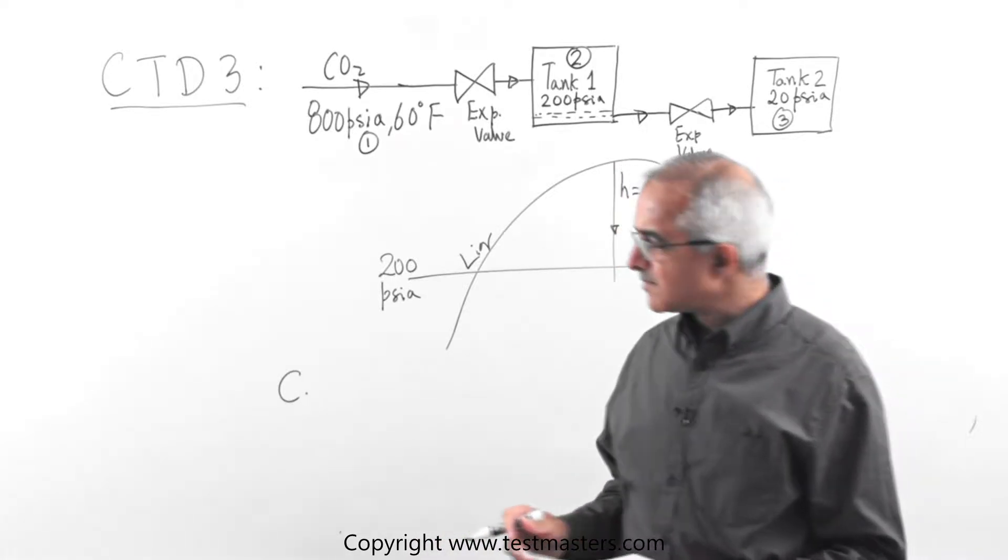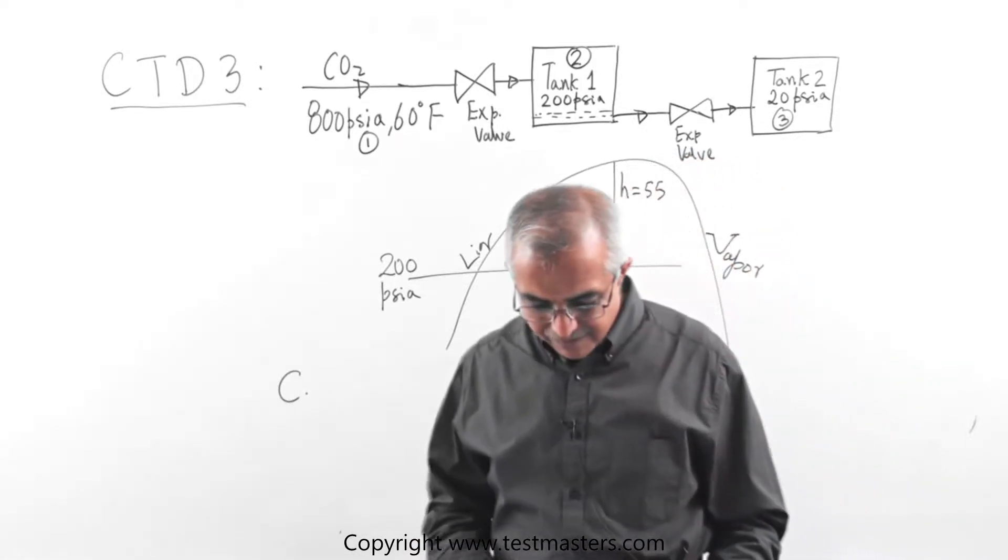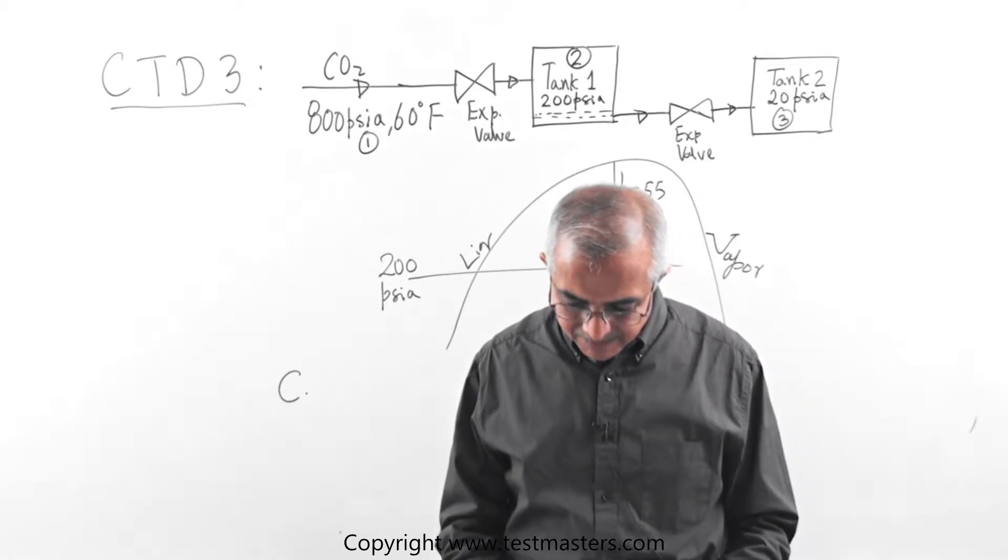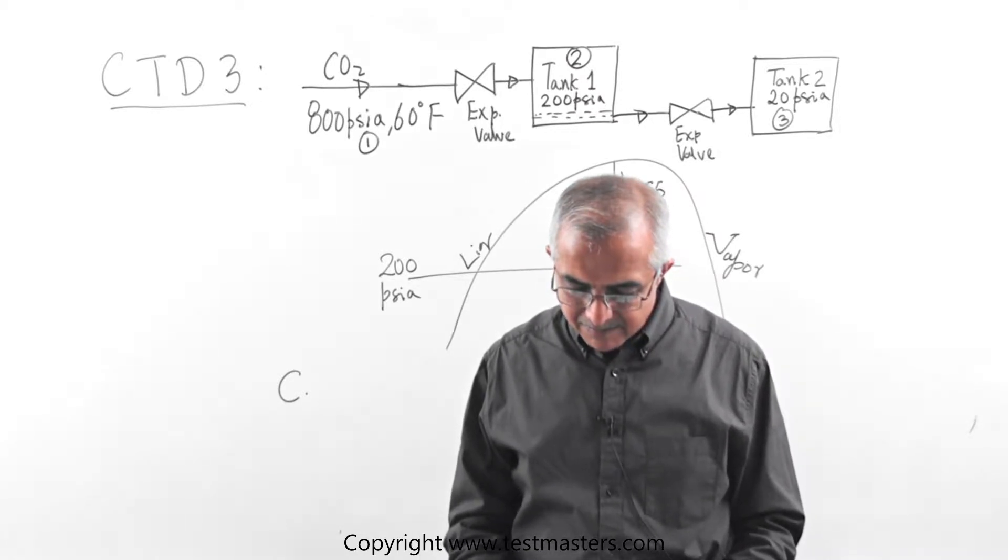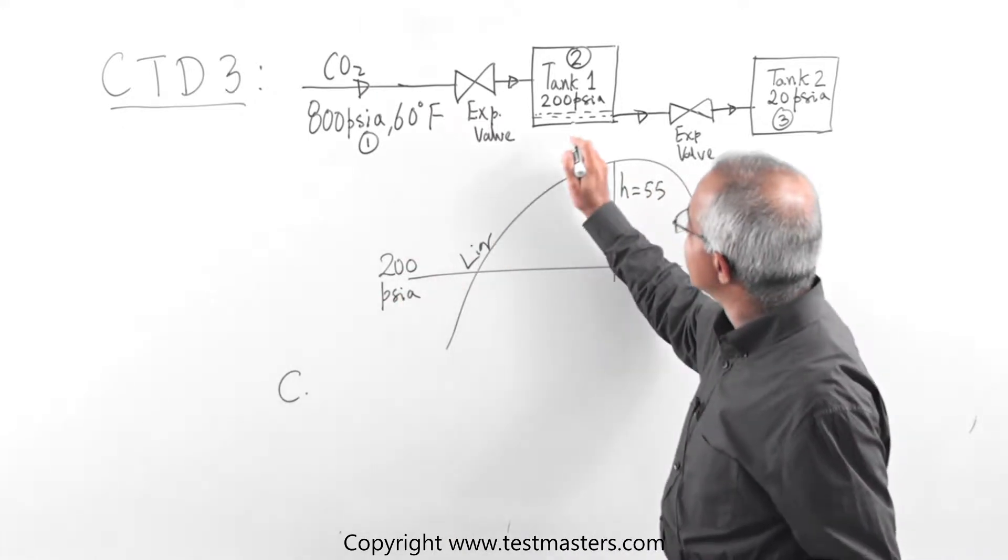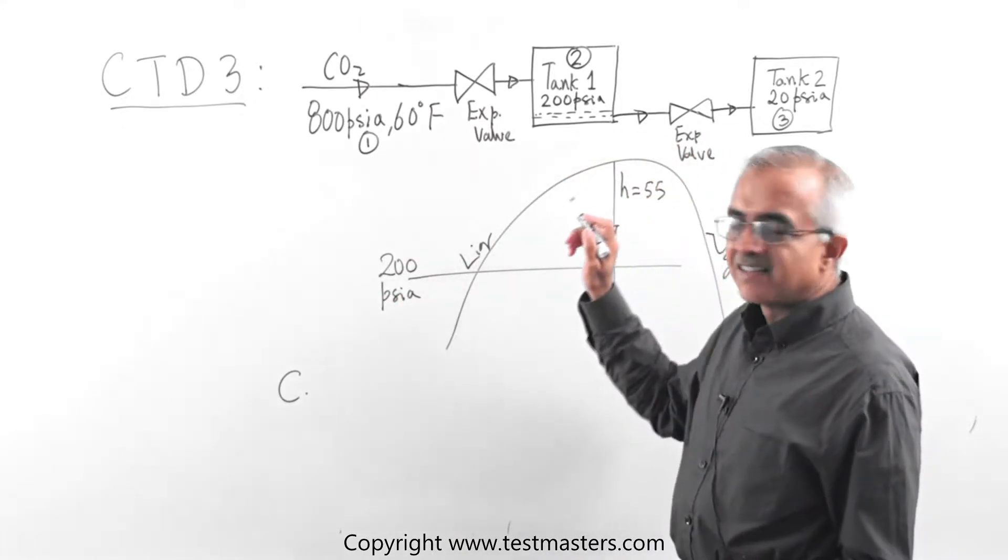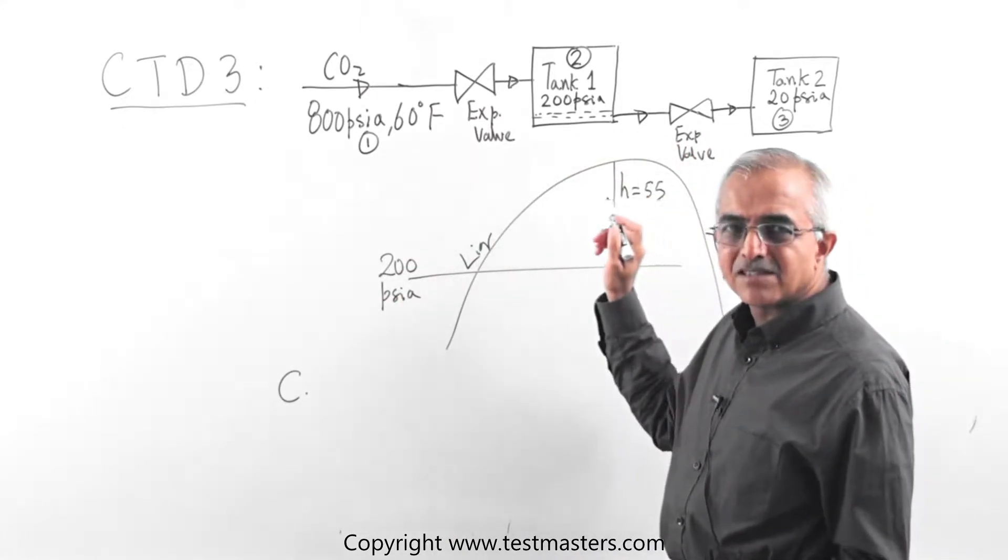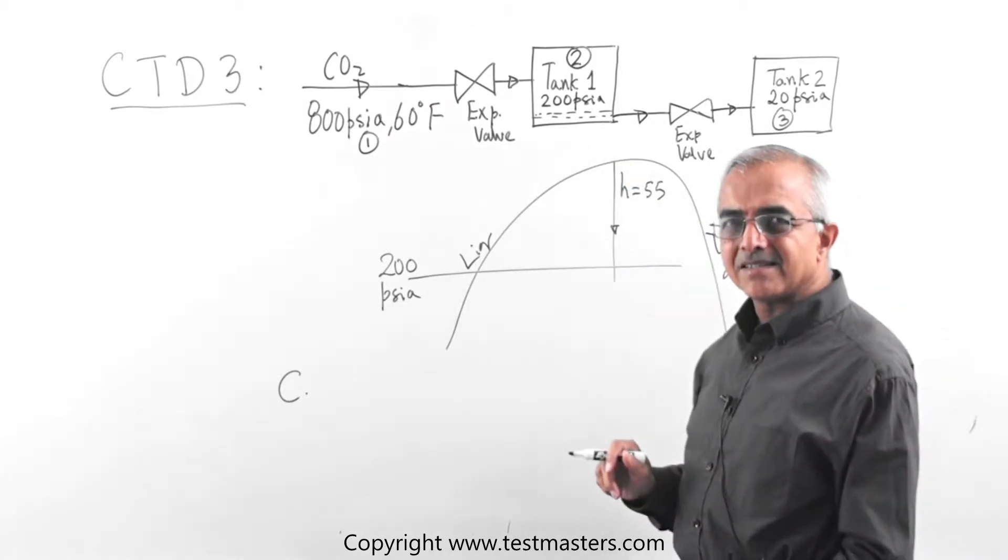Again we are in the phase diagram. Now look, please read carefully the problem statement. It says liquid from the first tank. So only the liquid from the first tank is flashed through another expansion valve and the pressure is reduced to 20 psi.